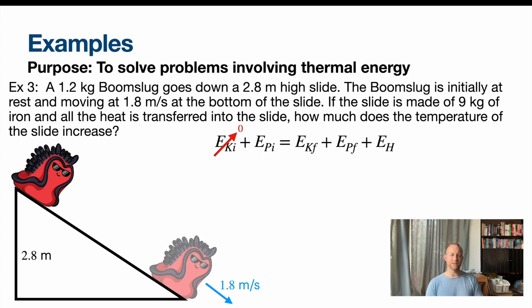So in this situation, we can cancel some stuff out. First of all, it starts from rest at the top. So my kinetic energy is zero. And at the bottom of the slide, you've got zero potential energy. So I can automatically cancel out those two things. Let's plug in some equations, some expanded equations for potential energy, kinetic energy, and heat. Notice with my masses, I've got an mb, and I've got an ms. The reason for this is the potential energy is from the Boom Slug. Your kinetic energy is also relating to the Boom Slug. But my heat energy, all the heat we said is going into the slide. So the equation for heat is the mass of the slide, not the mass of the Boom Slug. So this is why your masses need to be different, because they're relating to different objects.